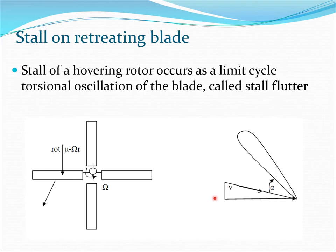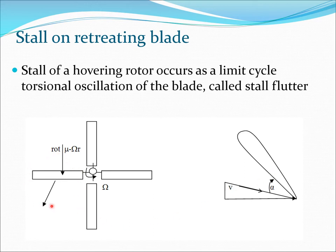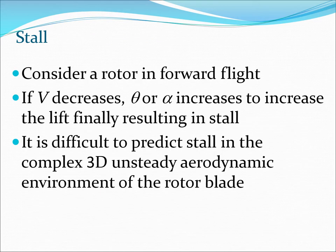Stall in a hovering rotor creates a limit cycle torsional oscillation of the blade, also known as stall flutter. If you take the rotor disk toward the retreating side, you encounter lower velocities, and because the velocities are low, the angle has to be higher in order to generate the same amount of lift. That is why there is a possibility of stall on the retreating blade — on one side the speed is higher, on the other side the speed is lower.